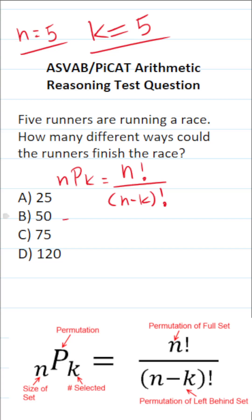This becomes 5P5 equals five factorial all over five minus five factorial. So what is five factorial? Five factorial is the same thing as five times four times three times two times one, all over five minus five, which is zero factorial. Zero factorial, just so you know, is going to be equal to one.